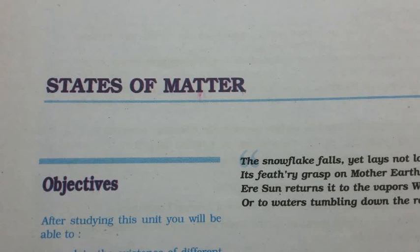Chapter 5: States of Matter. Introduction. In previous units, we have learnt about the properties related to single particles of matter, such as atomic size, ionization enthalpy, electronic charge density, molecular shape and polarity, etc. Most of the observable characteristics of chemical systems with which we are familiar represent bulk properties of matter, i.e., the properties associated with the collection of a large number of atoms, ions or molecules.